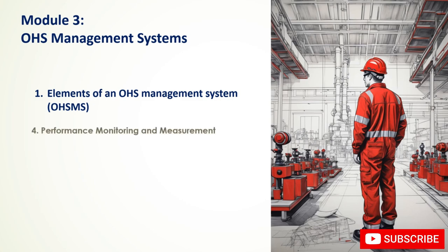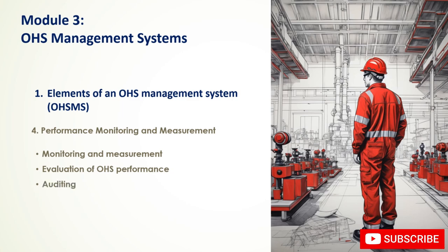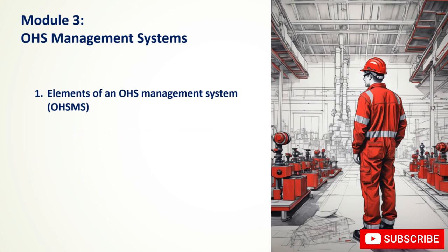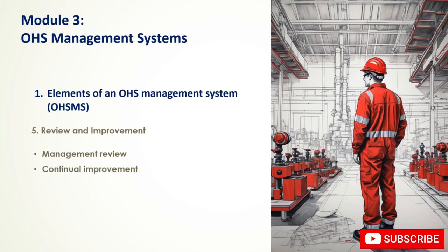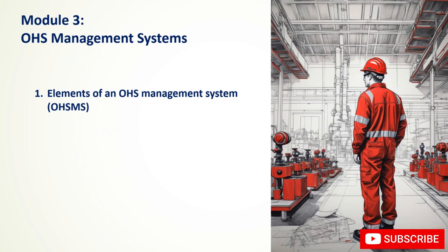Element (4) Performance Monitoring and Measurement involves collecting data on OHS performance indicators, evaluating the effectiveness of OHS activities, and conducting regular OHS audits to identify strengths and weaknesses. Element (5) Review and Improvement involves management review of the OHSMS to identify areas for improvement and implementing changes to enhance OHS performance.